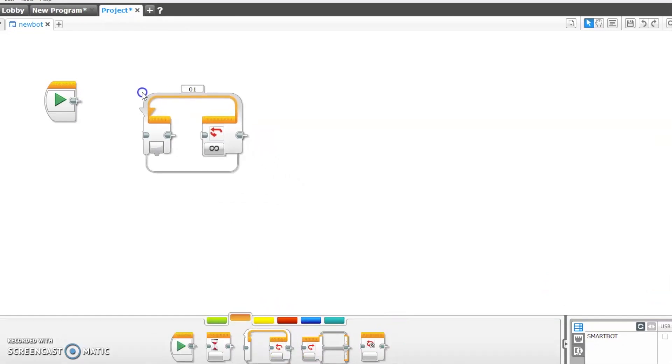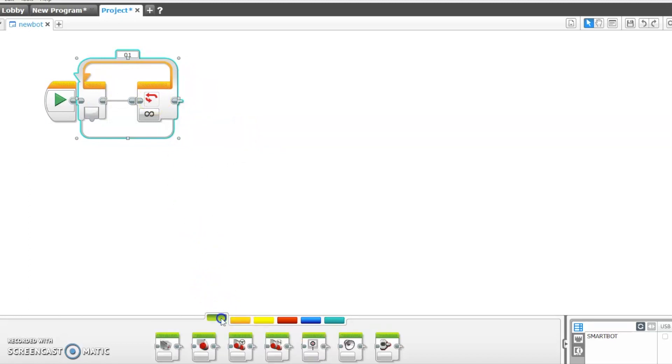So first of all we will take a loop and put a Move Tank block into the robot. The function of the Move Tank block is to control the motors of the robot. Now we will set the motors motion on to move forever.